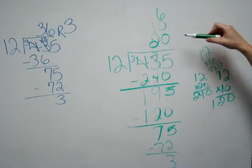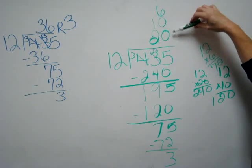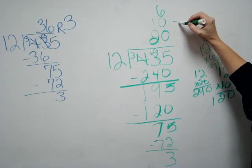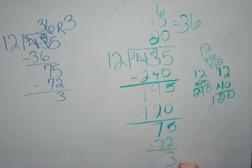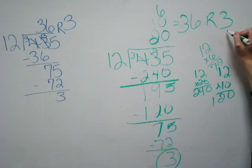The reason why it's called scaffold division is that you're guessing, and you're going to end up adding all these up together, and this is going to be 36. Remember you have a remainder here, which is 36 remainder 3.